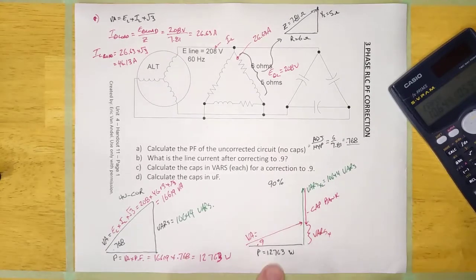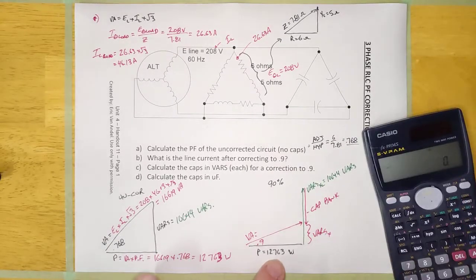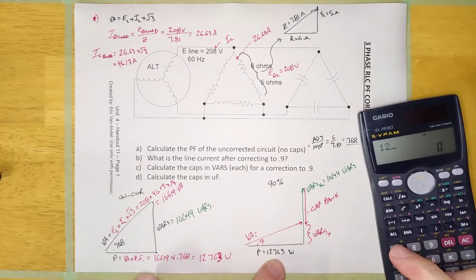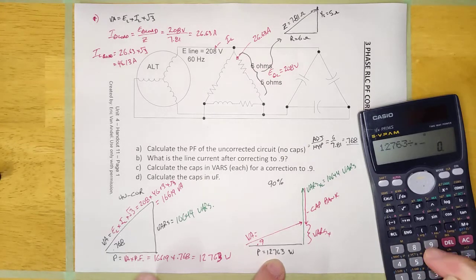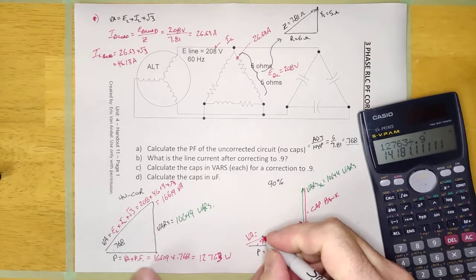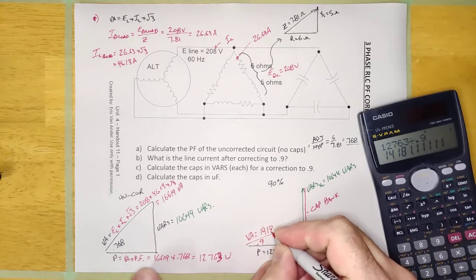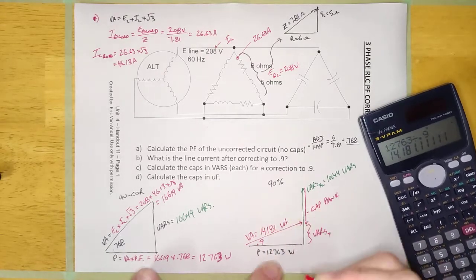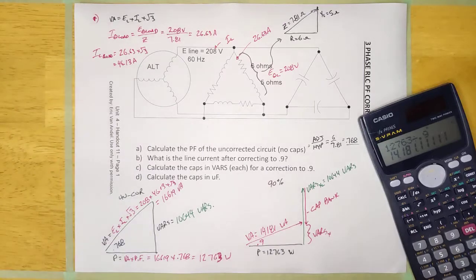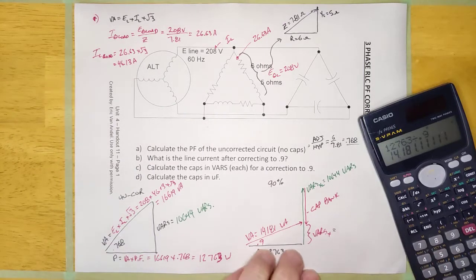I'm going to calculate my VA. It's going to be 12,763 divided by 0.9, which equals 14,181 volt amps. And I'm going to calculate my VARS X using Pythagorean theorem.